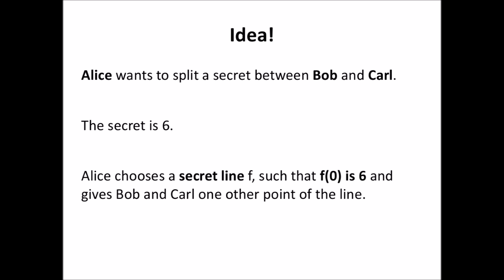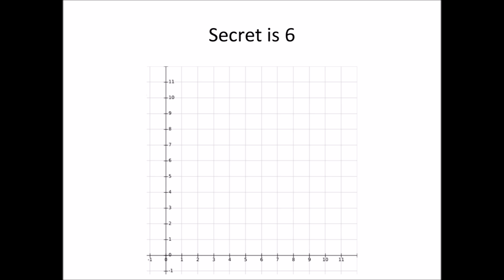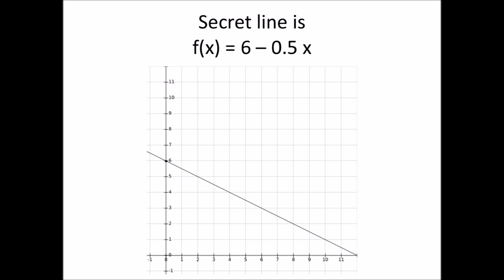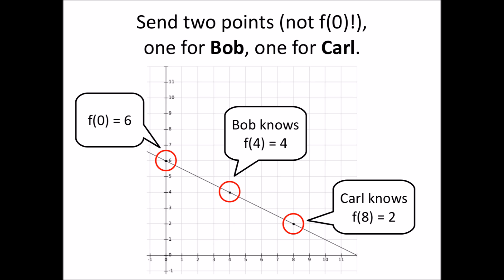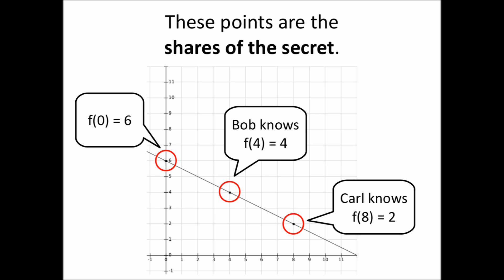This gives us the following idea. Say Alice wants to split the secret, 6, between two other persons, Bob and Carl. She can do that by choosing a secret straight line f such that f of 0 is 6, and she then gives Bob and Carl each one other point on that line. Graphically, Alice chooses a function that only she will know — here it is 6 minus half times x — and note that this function has the value 6 when x is 0. She then selects two different points on that line and gives them to Bob and to Carl. Bob knows that f of 4 is 4, and Carl knows that f of 8 is 2, and we call these two points the shares of the secret.